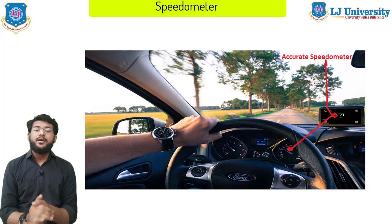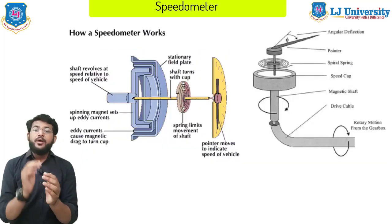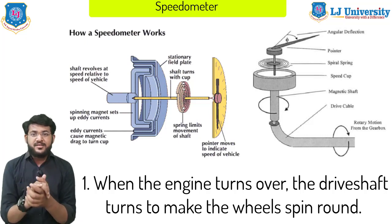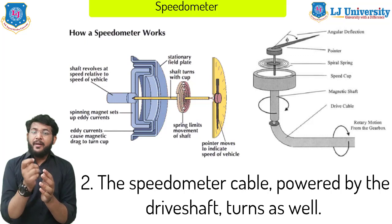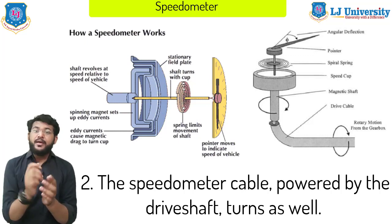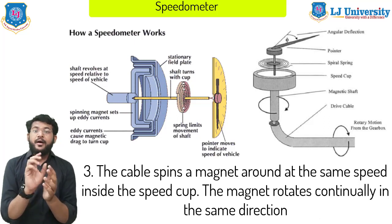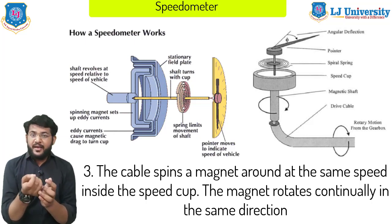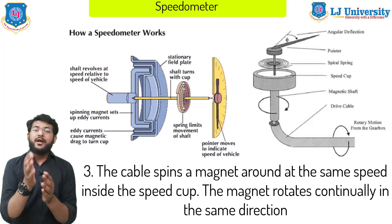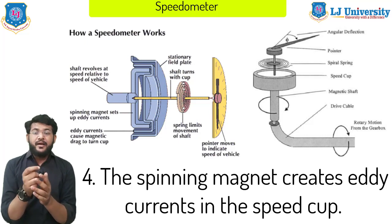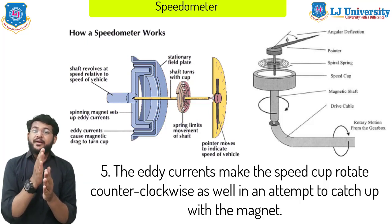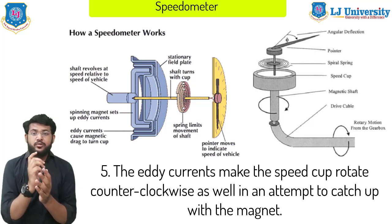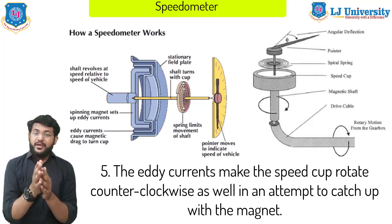Let's summarize how a speedometer works. First, when the engine turns over the drive shaft turns to make the wheels spin. Second, the speedometer cable, powered by the drive shaft, turns as well. Third, the cable spins a magnet at the same speed inside the speed cup. The magnet rotates continuously in the same direction. Fourth, the spinning magnet creates eddy currents in the speed cup.